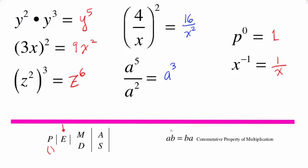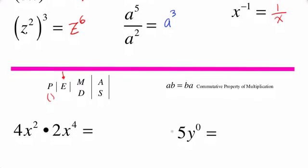Another thing that comes up when doing these problems is the commutative property of multiplication. When you are multiplying you can actually rearrange the terms that you're multiplying — you do not have to multiply left to right. If it's a times b you can do b times a. Most commonly it'll be a times b times c and you can move the c wherever you like.